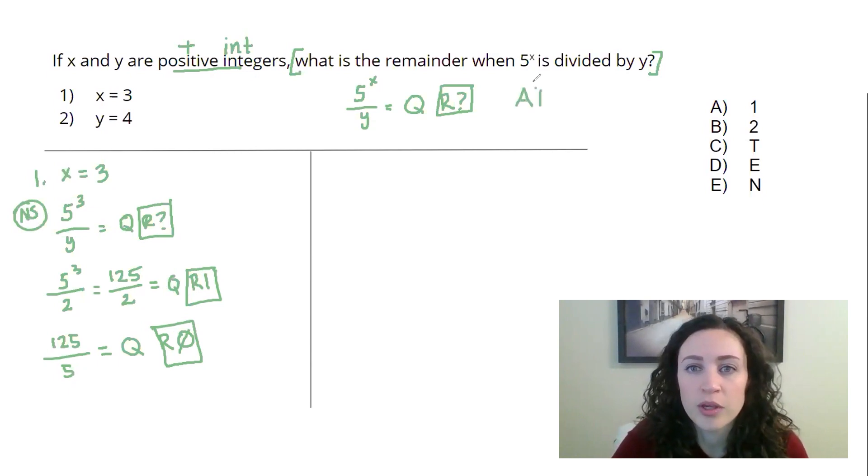In Manhattan Prep, we use this grid to keep track of answer choices for elimination purposes. Now, A and D both require statement 1 to be sufficient on its own, which means that I can actually eliminate both of them in one go. So now I only have three answer choices to work with.